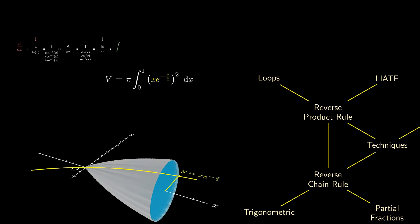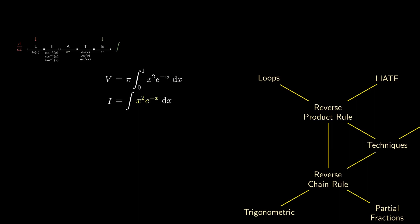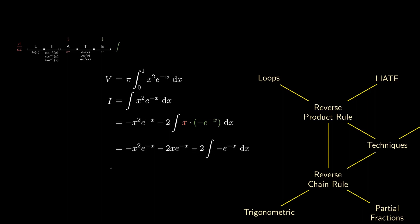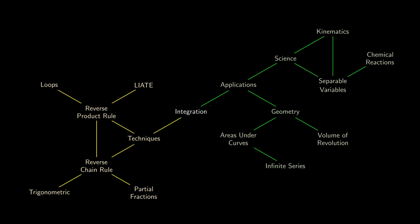Substituting the expression and simplifying using algebra, we now need to find the integral of x squared times e to the negative x. Since the exponential is rightmost, we integrate that to get negative e to the negative x. We keep x squared and differentiate it to get 2x. Simplifying, we do ISID a second time — since the exponential is rightmost, we integrate negative e to the negative x to get e to the negative x, keeping x and differentiating to get 1. The integral of negative e to the negative x is simply e to the negative x. Adding the constant, we get our final answer. We can plug in the limits of integration to obtain the volume of revolution. This is A-level integration in a nutshell.